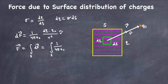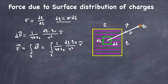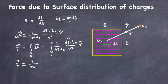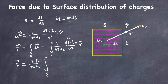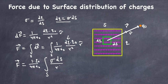Plugging in dQ = Sigma · dS and taking constants outside, the total force is: F = (1 / 4πε₀) · q₀ · ∫_S (Sigma · dS / r²) · r-hat. This is the equation for the total electrostatic force acting on charge q₀ due to the charge on the whole surface S.